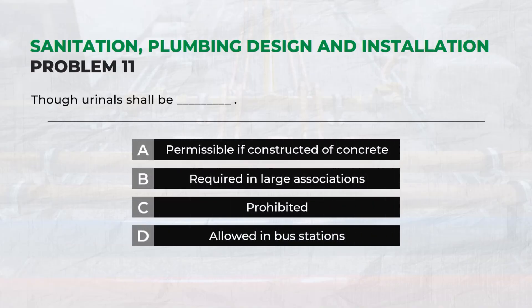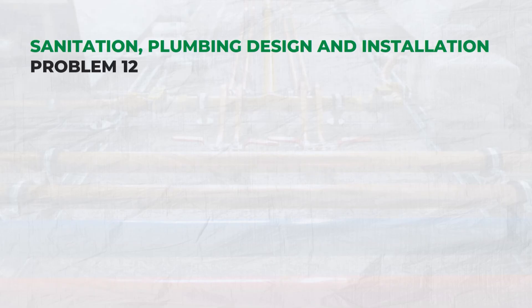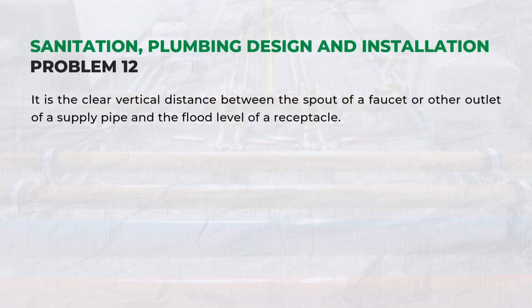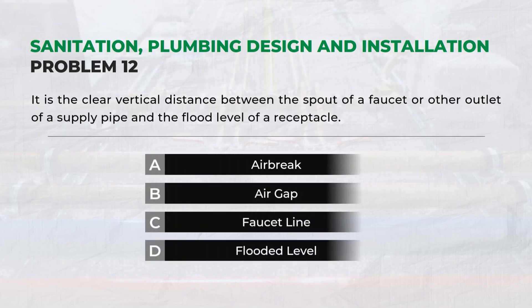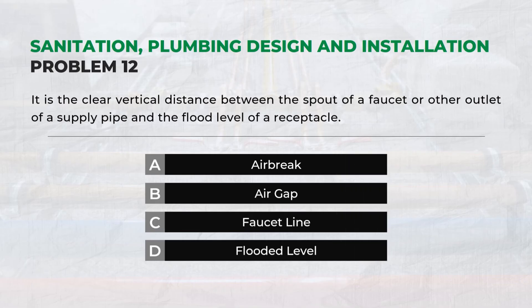It is the clear vertical distance between the spout of a faucet or other outlet of a supply pipe and the flood level of a receptacle — Answer: B. Air gap.